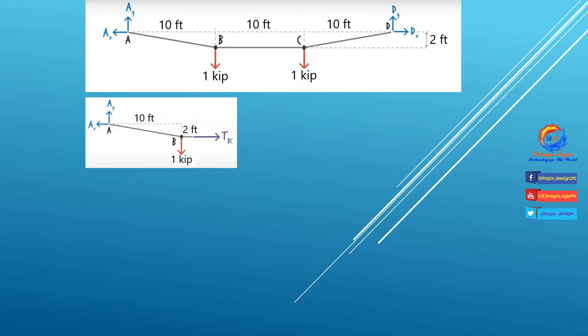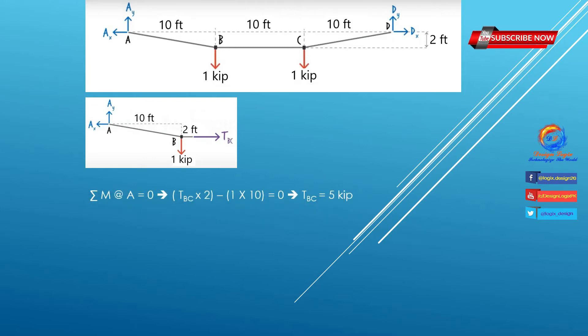We will use the same equilibrium equations. Summation of moment about joint A equals 0: TBC times 2 minus 1 times 10 equals 0, where TBC creates a counter-clockwise moment and the 1 kip load creates a clockwise moment. Solving this, we get TBC equals 5 kips. So the tension force in cable BC equals 5 kips.